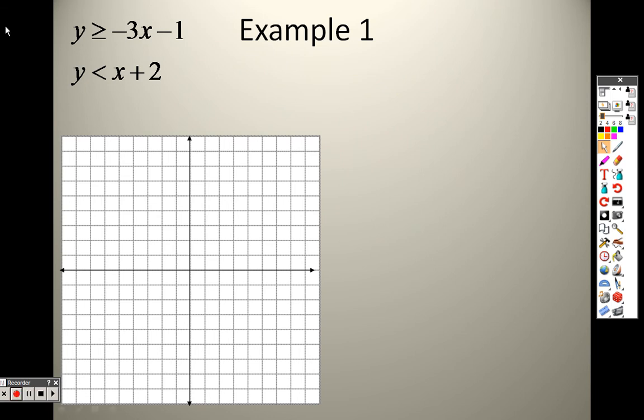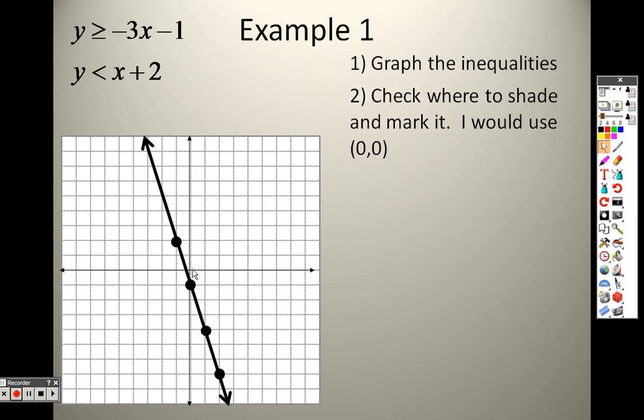So, with this one, let's try to graph just the first one here. This y-intercept is negative 1, which means I plot a point there at negative 1. And the slope is negative 3, which means it's down 3, right 1. Down 3, right 1.